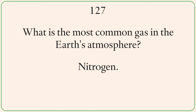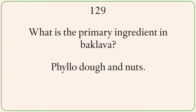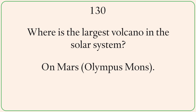What is the most common gas in the Earth's atmosphere? Nitrogen. Who invented the light bulb? Thomas Edison. What is the primary ingredient in baklava? Phyllo dough and nuts. What is the largest volcano in the solar system? Olympus Mons, on Mars.